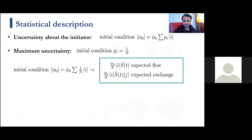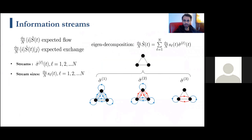In real-world complex systems it is really hard to track the activity of all units, so you need a probabilistic initial condition. You cannot be sure which node would be the initiator of information flow. If you have no idea which unit would initiate the flow, you assign a uniform probability distribution and obtain the expected flow of the field from each node and the expected exchange between every pair of nodes.